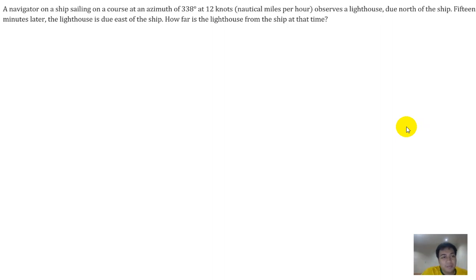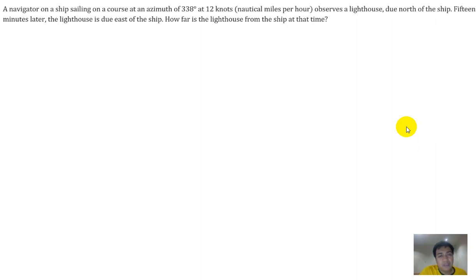This is an example application of the azimuth discussed in the previous video. A navigator on a ship sailing on a course at an azimuth of 338 degrees at 12 nautical miles per hour observes a lighthouse due north of the ship. 15 minutes later the lighthouse is due east of the ship. How far is the lighthouse from the ship at that time?